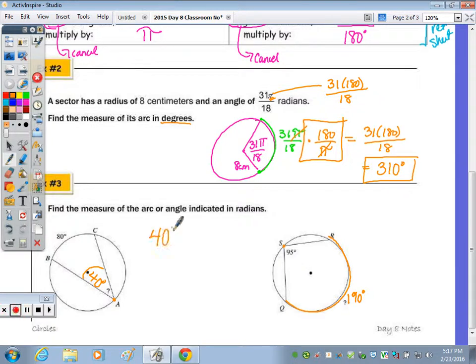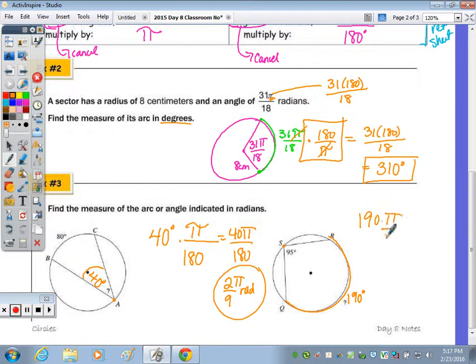So to change 40 degrees to a radian measure, we want the degrees on the bottom so that we can cancel out, and pi in the numerator. So 40 pi over 180. So what does that reduce to? It reduces to 2 pi over 9 radians. 190 times pi over 180, so to reduce that, they're both divisible by 10, so we end up with 19 pi over 18 radians.